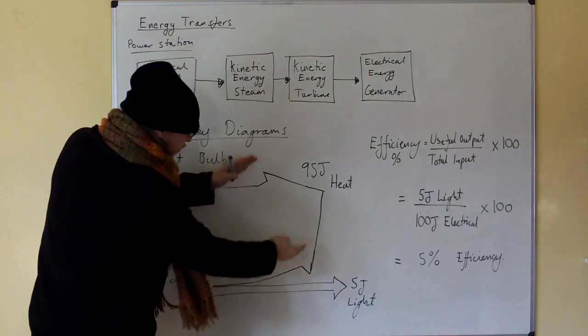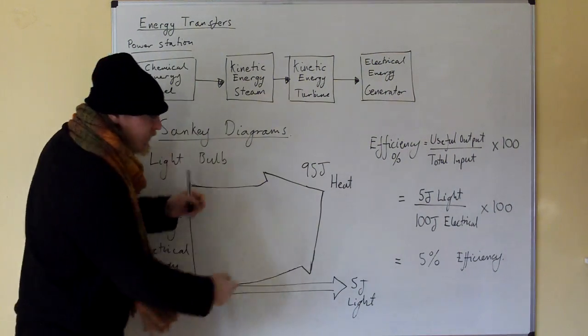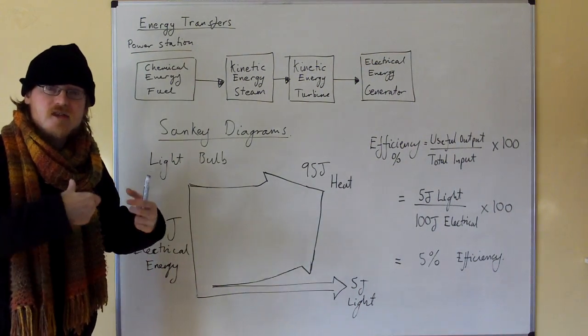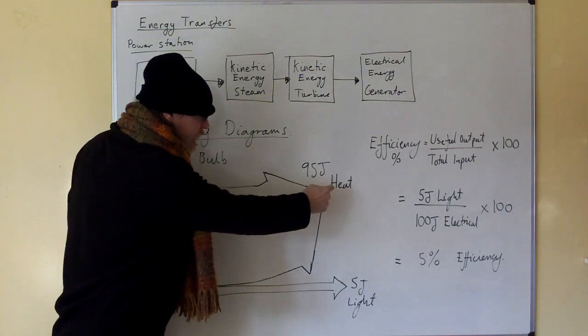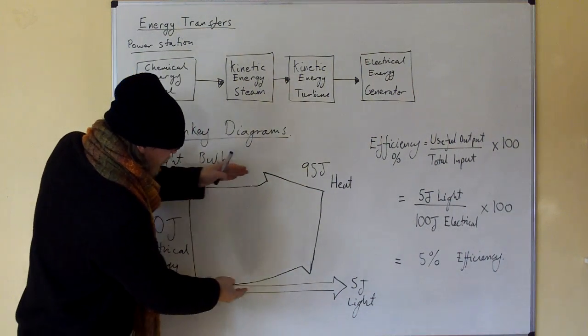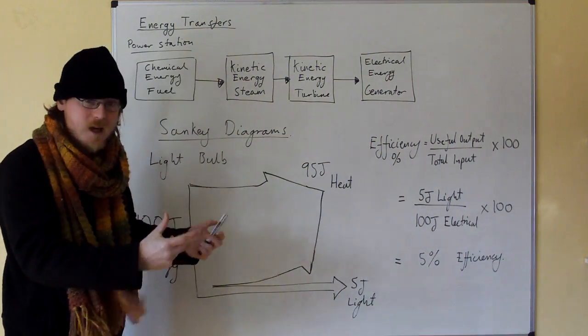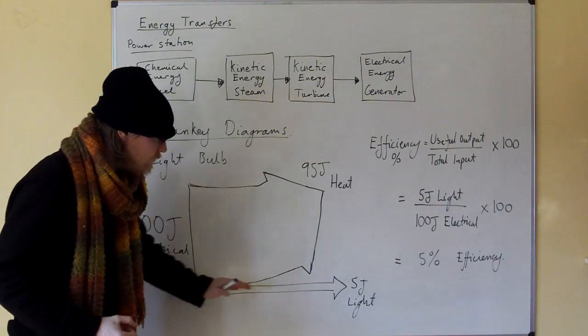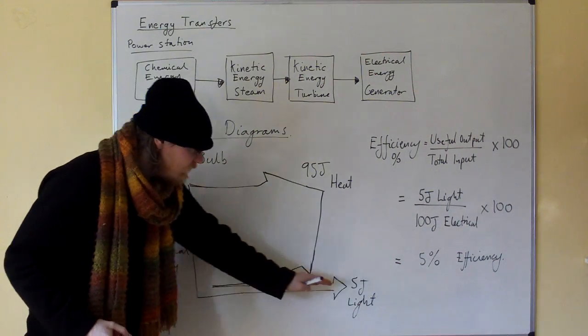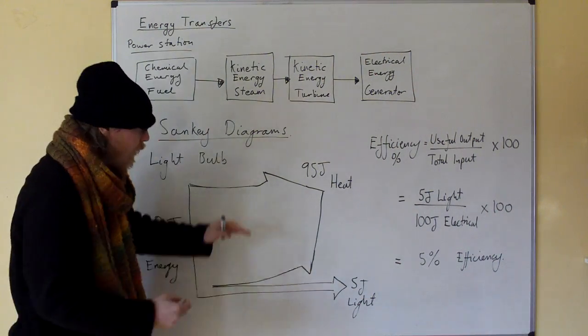All of the energy that gets bent off is the wasted energy that's no use to us. So 95 joules of this energy that we put in gets bent off as heat and is wasted. Only 5 joules get through to the other side. Only 5 joules is useful to us, doesn't get wasted, doesn't get bent off.